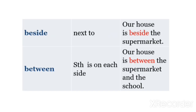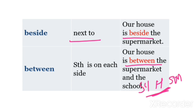Next, हम बात करते हैं 'beside' और 'between' की। Beside का मतलब होता है next to — यानी बाजू में या बगल में। Our house is beside the supermarket. इसी तरह 'between' का use तब होता है जब कोई चीज़ दो चीज़ों के बीच में हो — Our house is between the supermarket and the school — मतलब house के एक तरफ supermarket है और दूसरी तरफ school है।